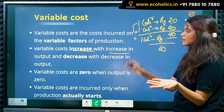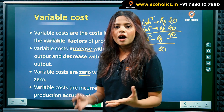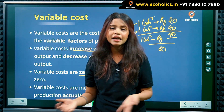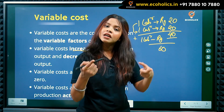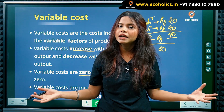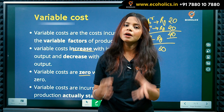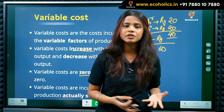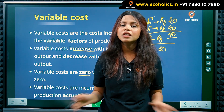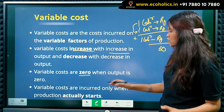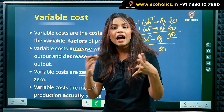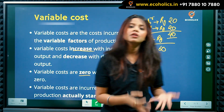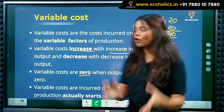The third point is that variable costs are zero when output is zero. For example, if we are not doing any production, why would we employ labor? Since there is no variable factor employed, and we don't need raw materials either, the variable cost is zero. Variable costs are incurred only when production actually starts — you need to produce a product, which then requires labor and raw materials.